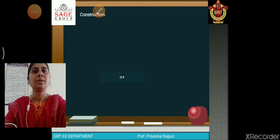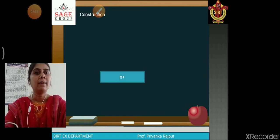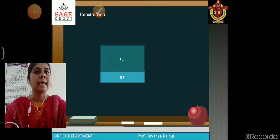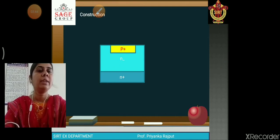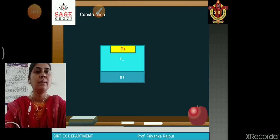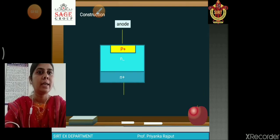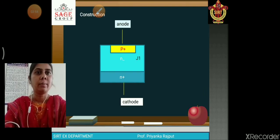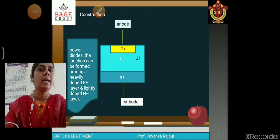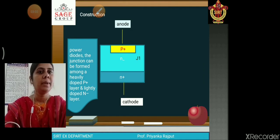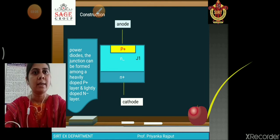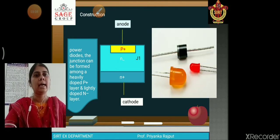Now, construction. In a power diode, the first layer is N+, the second layer is N-, and the third layer is diffused P+. With the P+ layer, we connect the anode terminal, and with the N+ layer, we connect the cathode terminal. The junction J1 in the power diode is formed between the heavily doped P+ layer and the lightly doped N- layer. This is a diagram of the diode.